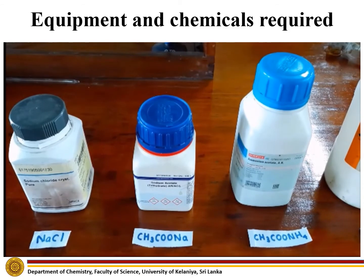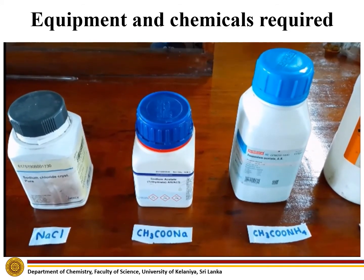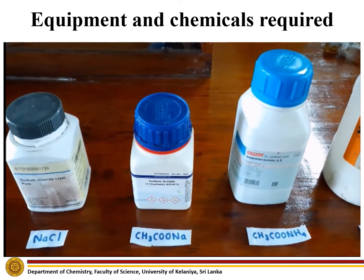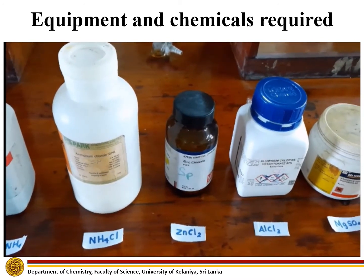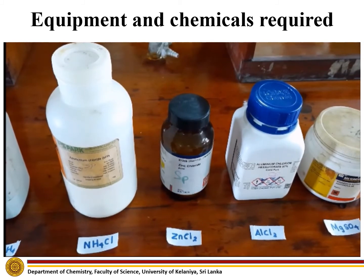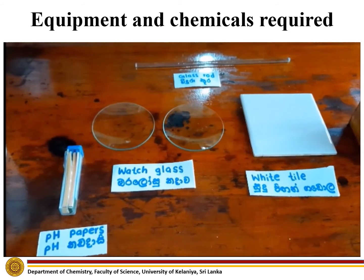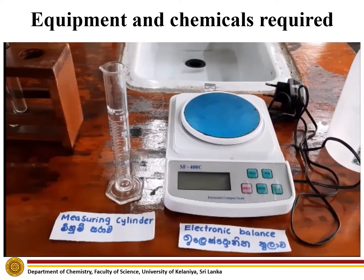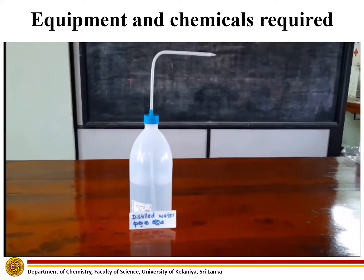The chemicals required for this practical are sodium chloride, sodium acetate, ammonium acetate, ammonium chloride, zinc chloride, aluminium chloride, and magnesium sulfate. The laboratory equipment required for this practical are pH papers, watch glasses, white tile, glass rod, test tubes, measuring cylinder, electronic balance, and distilled water.